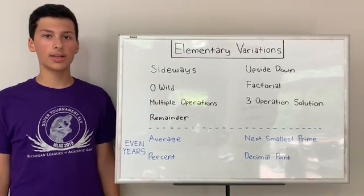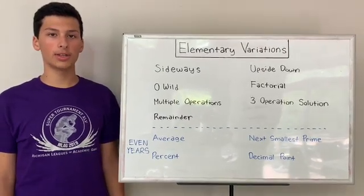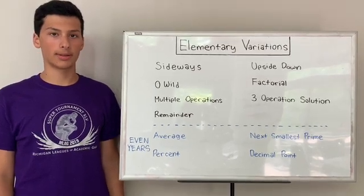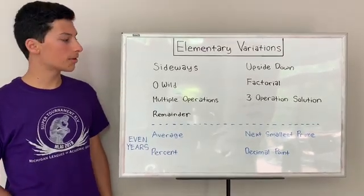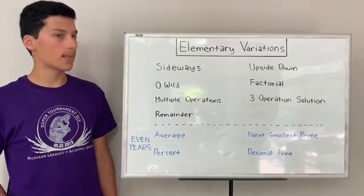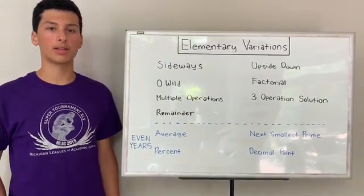So a variation is a little change or addition to the game of equations that makes it more interesting and complex. There are a total of 11 variations in elementary equations, but you choose 3 of them in each game.